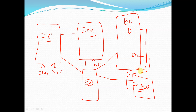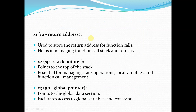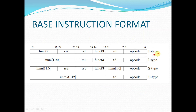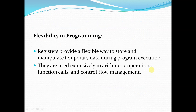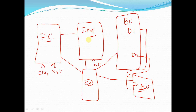All instructions will be stored in our instruction memory. The instructions we are going to discuss — R-type, I-type, S-type, U-type — all these instructions will be stored in our instruction memory. We will discuss the instruction memory and control unit in detail. For today's agenda we will focus on the register unit.